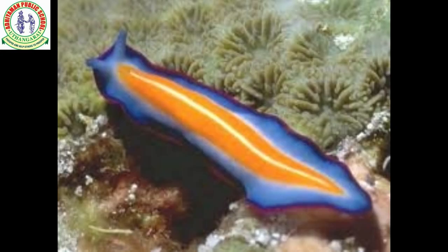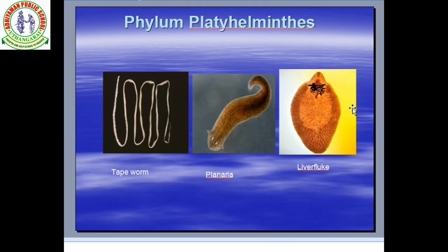Good morning, welcome to the world of animal kingdom. Today we can study the characteristic features of Phylum Platyhelminthes. Phylum Platyhelminthes are actually called as flatworms. They are dorso-ventrally flattened organisms. You can see that tapeworm, planaria, liver fluke — these are all examples of Phylum Platyhelminthes, so that type flatworms.